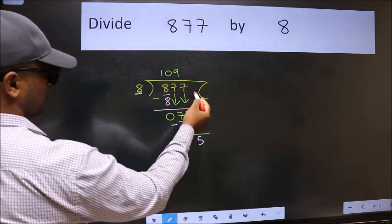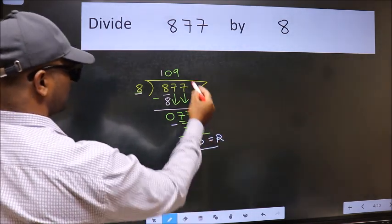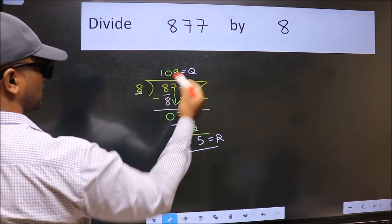No more numbers to bring it down. So we stop here. This is our remainder and this is our quotient.